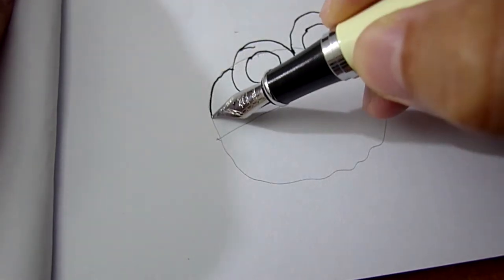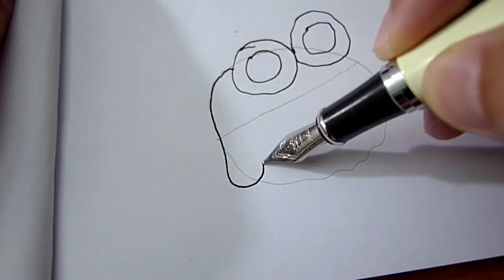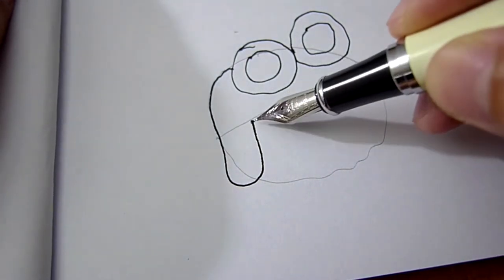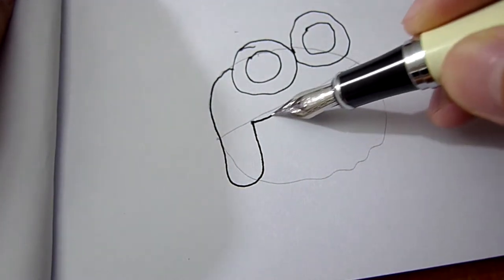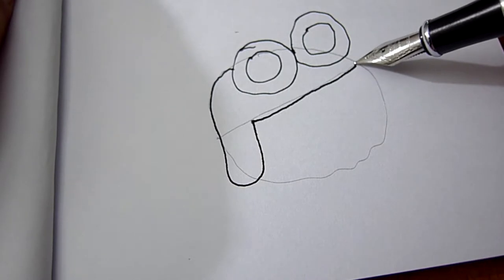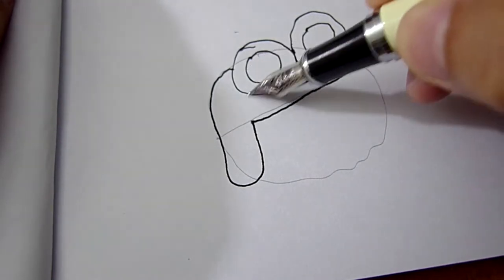You kind of follow this line. Then you extend it to make that, what do you call that? The flap or whatever you call it. You follow the line again and it goes up and that's his helmet.